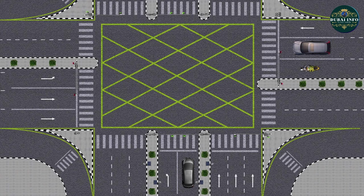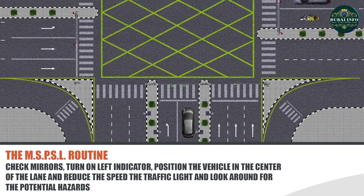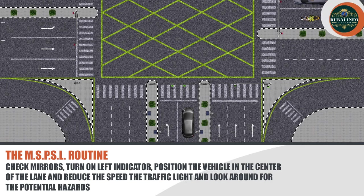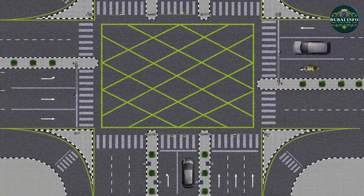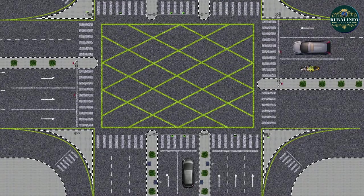After lane change, start approaching in the selected lane by following the MSPSL routine. Check mirrors, turn on left indicator, position the vehicle in the centre of the lane and reduce the speed, obey the traffic light, and look around for potential hazards such as pedestrians, cyclists, vehicles in the yellow box, and emergency vehicles.